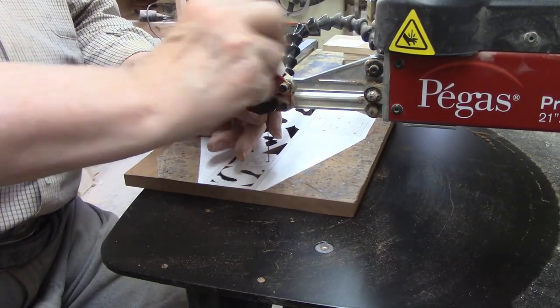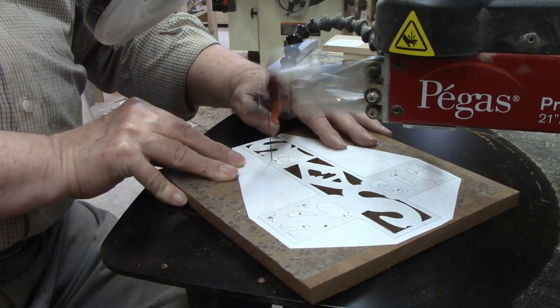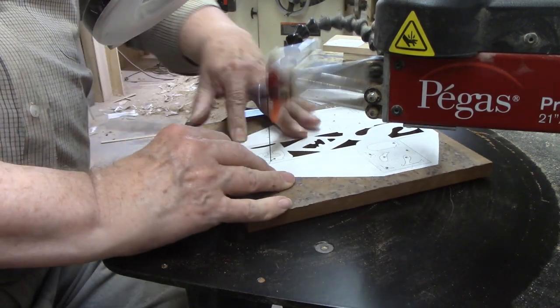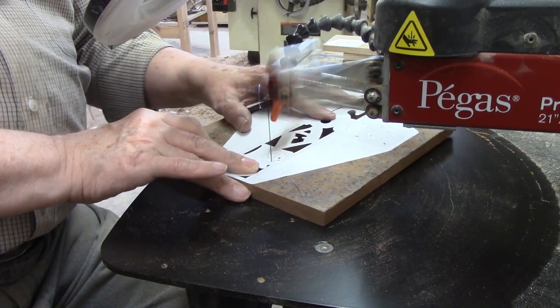This is the last cut on the vertical part of the cross which spells out the word saves. Those triangular cuts on the sides of the bottom S required a bit of skill and patience. Part of why I enjoy using the scroll saw so much.